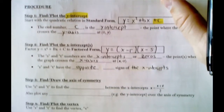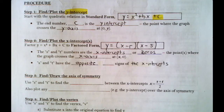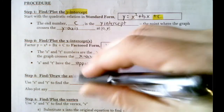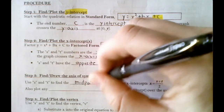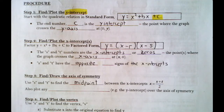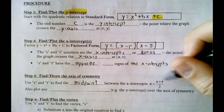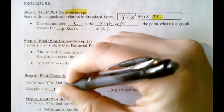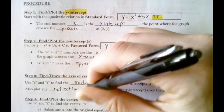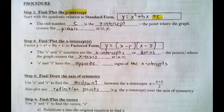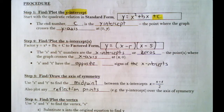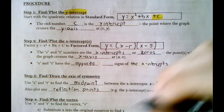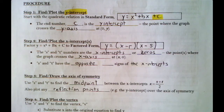Once you've found the x-intercepts and graphed them, we find the axis of symmetry by finding the middle of the x-intercepts. There's an easy graphical way to do it, but mathematically you add the x-intercepts and divide by two. Once you have your axis, you can plot reflection points — any point on one side of the axis of symmetry gets reflected to the other side. Finally, we find the vertex by taking the midpoint x-value and substituting it into the equation.